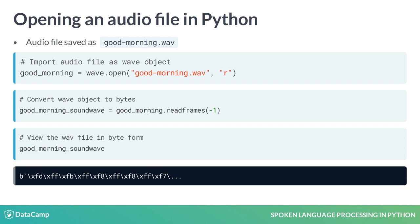Now we've converted the audio file to bytes — what do they look like? We can see a snippet of the entire sound wave in byte form. But remember how kilohertz means thousands of pieces of information per second? The goodmorning.wav audio file is 48 kilohertz and 2 seconds long — that's 96,000 chunks of data, all for only 2 words. Don't worry if the output looks confusing for now; we'll learn how to convert these bytes into something more useful shortly.